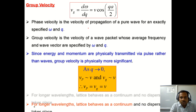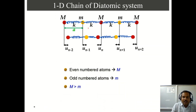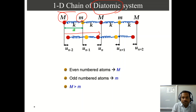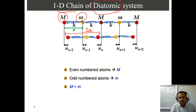Today's class we move to the diatomic system, again considering a one-dimensional chain. There are two kinds of atoms — capital M and small m. The periodicity of the lattice is no longer a; it is now 2a. The mass M (capital) is heavier than the mass m (small), and they are connected through bonds having the same spring constant k.